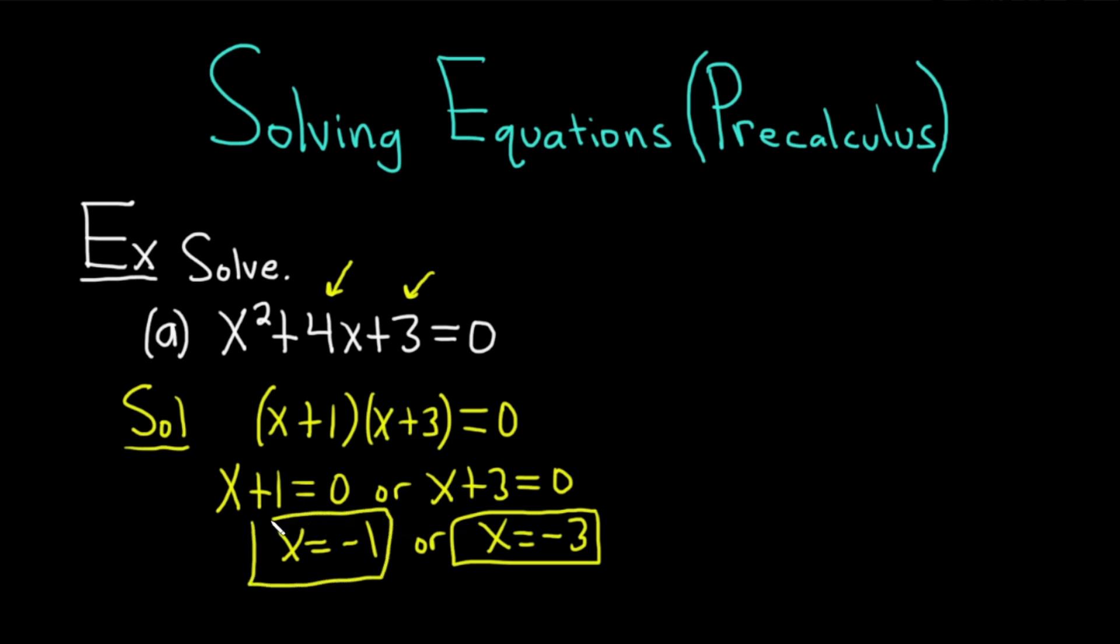Sometimes people wonder why do we write 'or' if they're both solutions? It's because 'or' in mathematics is not like 'or' in English. Or in mathematics is inclusive. It means one or the other or both. The 'or' in English is actually called, just for fun, it's called xor. It's the exclusive or. Anyways, let's do another equation.